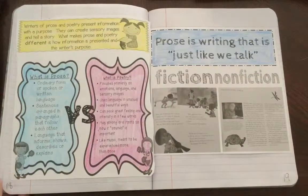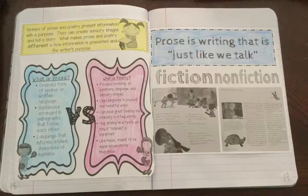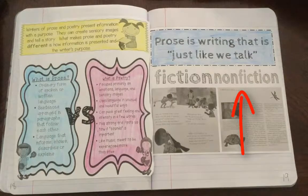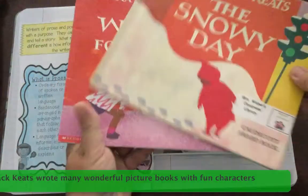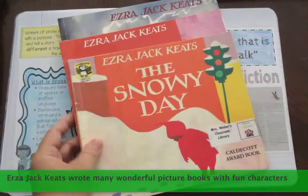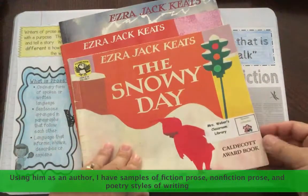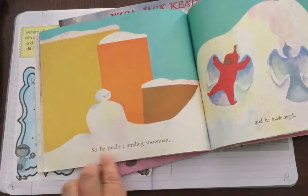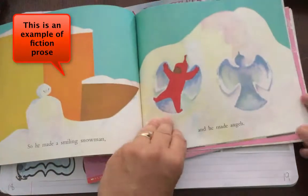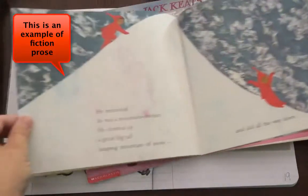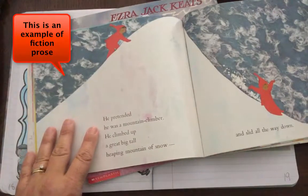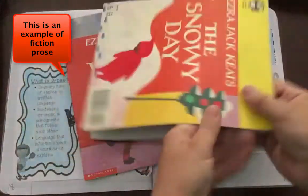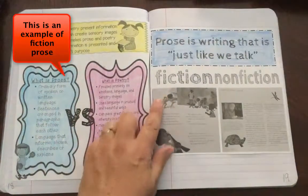Let's start with prose. Prose writing is writing that is just like we talk. We have a fiction sample and a nonfiction sample, and I'm going to use a great writer, Ezra Jack Keats, to look at our examples. He made a smiling snowman and he made angels. He pretended he was a mountain climber. He climbed up a great big tall heaping mountain of snow and slid all the way down. These are some examples of fictional prose writing.